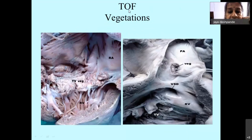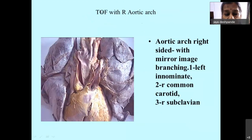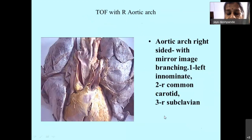One of the major complications often seen in TOF is infective endocarditis. Here is an example of vegetations on the tricuspid valve, pulmonary valve, and main pulmonary artery. Another association is with the right aortic arch — normally the aortic arch is left-sided, but in approximately 25 percent of Fallot's cases the aortic arch is right-sided. In a right aortic arch, the first branch is the left innominate, the second is the right common carotid, and the third is the right subclavian.